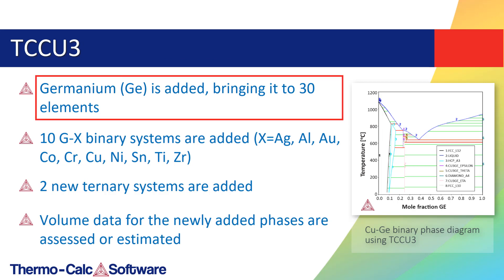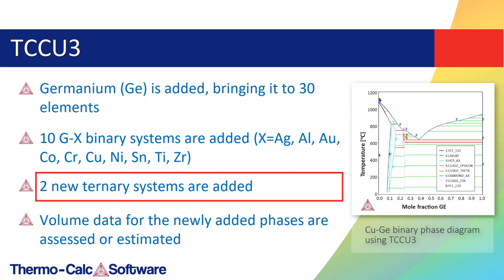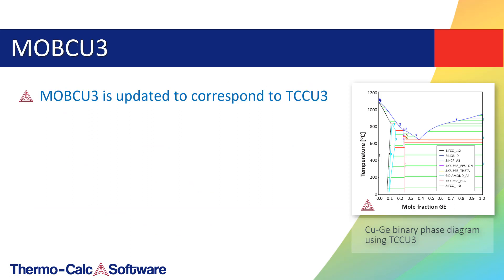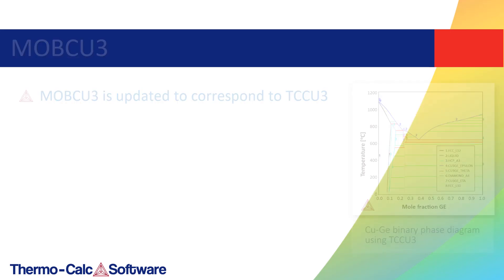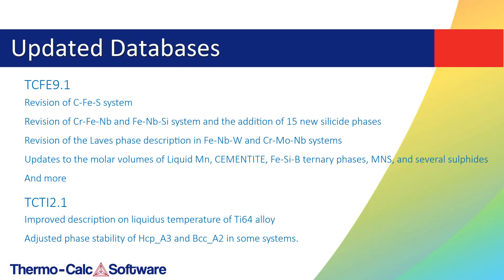TCCU3 adds germanium, bringing it to a 30-element framework. Ten germanium binary systems are added and two ternary systems are added. Volume data for the newly added phases are assessed or estimated. The companion mobility database MOBCU3 is updated to correspond to the updates in TCCU3. The steel and Fe alloys database TCFE9 and the titanium database TCTI2 have been updated with the improvements currently listed on the screen.